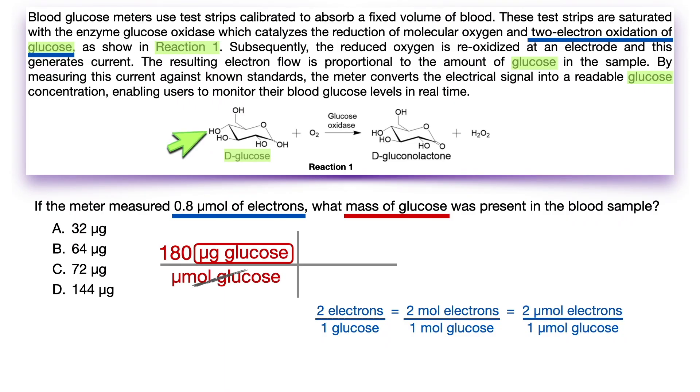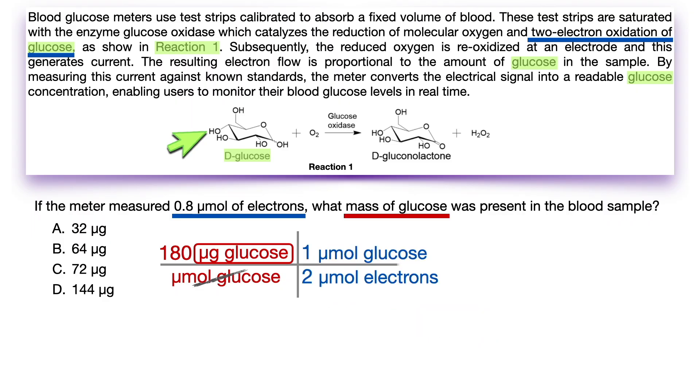Now back to stoichiometry. In order to cancel the micromole of glucose out, we have to flip the conversion so that one micromole of glucose is on the top. And now you can clearly see that we have to cancel out micromoles of electrons, which is easy because we have 0.8 micromoles of electrons in the question stem that we haven't used yet. So we can place that on the top in our stoichiometry to cancel out the micromoles of electrons below.